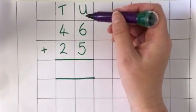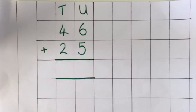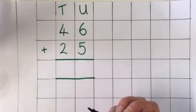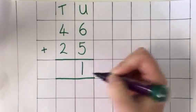So I need to add the units column first. 6 add 5 is 11. 11 would be written as 1 ten and 1 unit, so I'm going to put the unit in the answer box.